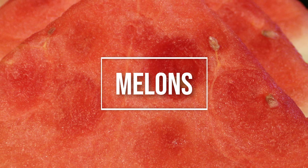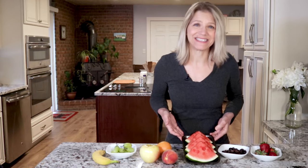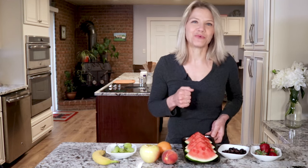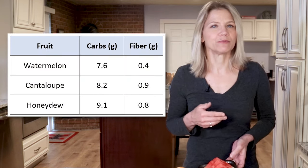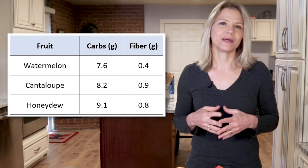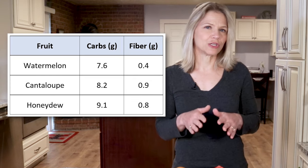Melons are also low in total carbs by weight, which is thanks in part to their high water content, which is evident any time that you bite into a juicy piece of watermelon. Using our standard serving size, we see that watermelon has only 7.6 grams of carbohydrates, cantaloupe has 8.2, and honeydew melon has 9.1 grams. So melons rank as lower-carb fruits. However, they are also some of the lowest fiber fruits, so if you're looking for fruit to boost the fiber content of your diet, melons will not get you very far.